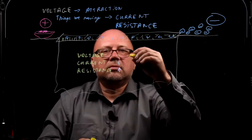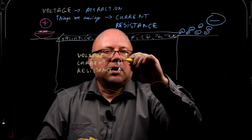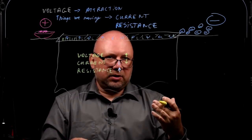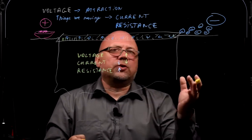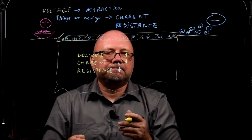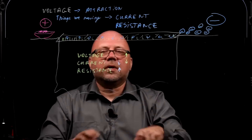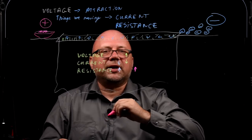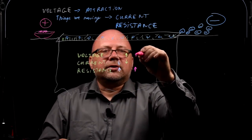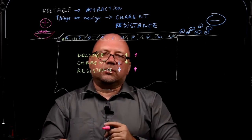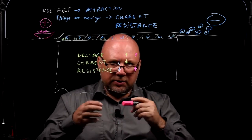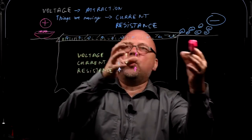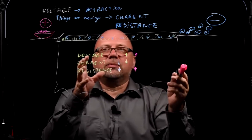Bigger voltage means bigger current, because if those dogs are more attracted they'll try to run faster; if they're less attracted, they won't move as fast. Also, if there is a bigger resistance, you'll understand later that the voltage or attraction is going to be bigger as well — because if the resistance is so high that they want it but can't get there, they want it even more.